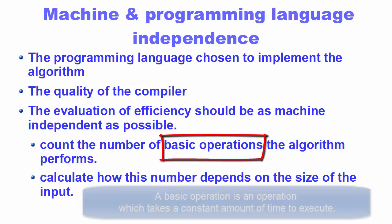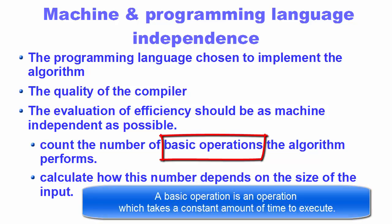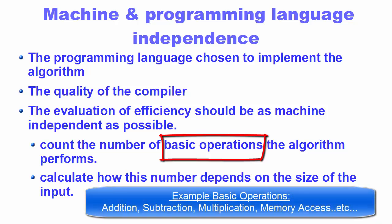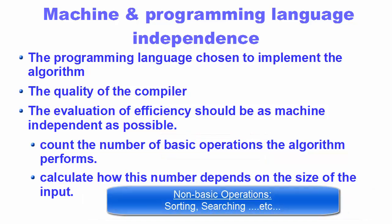A basic operation is an operation which takes a constant amount of time to execute. Hence the efficiency of an algorithm is the number of basic operations it performs. Examples of basic operations include addition, subtraction, multiplication, memory access, and returning from a function. Non-basic operations include things like sorting a large array or searching through a number of elements inside an array.